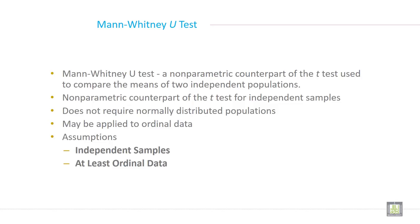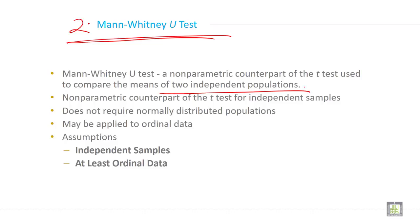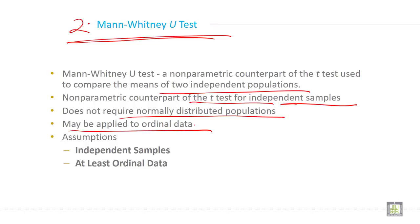So after the run test, this is the second type of non-parametric test and it is called the Mann-Whitney U test. It is a non-parametric counterpart of the T-test used to compare the means of two independent populations. It does not require a normally distributed population and may be applied for ordinal data.